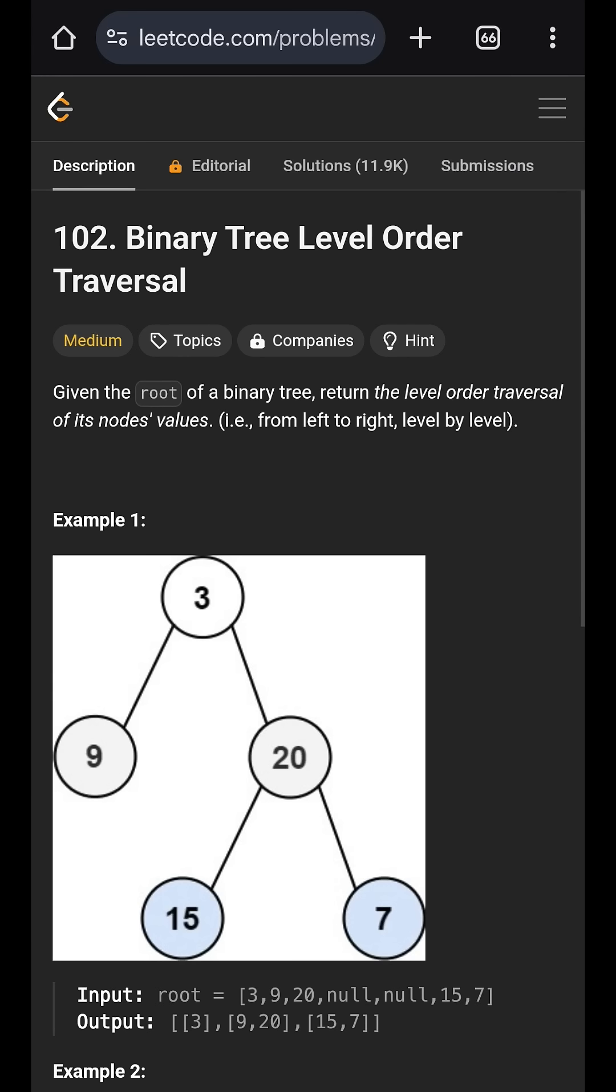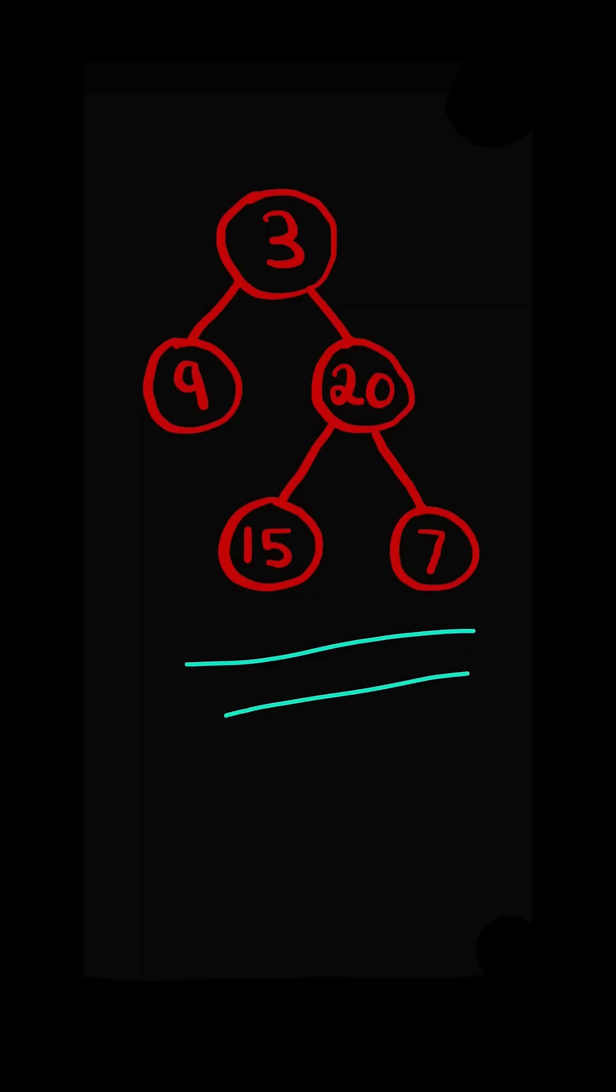Binary tree level order traversal. Given a binary tree, return the level order traversal of the value, which means we make the first level as a list, the second level, and the third level.